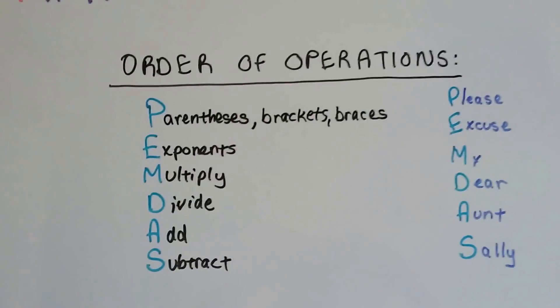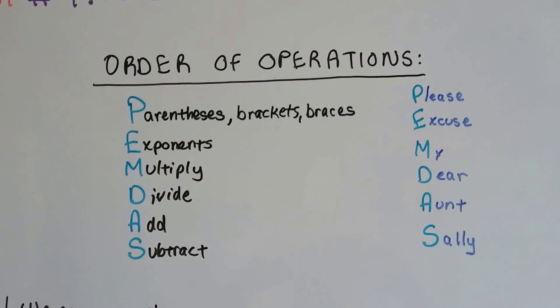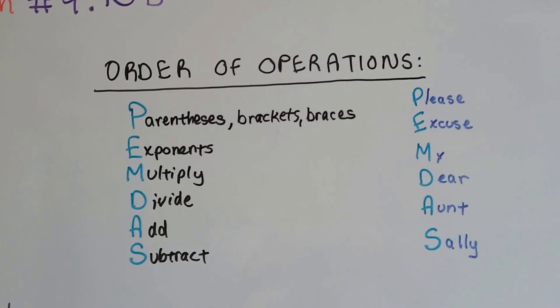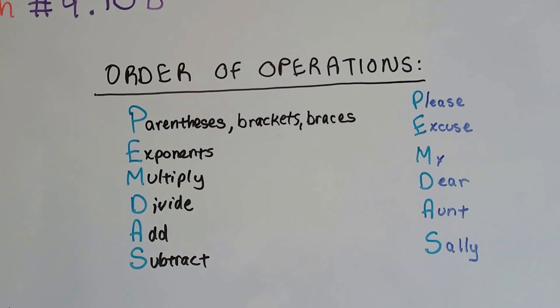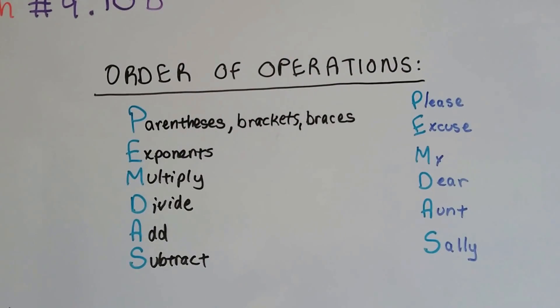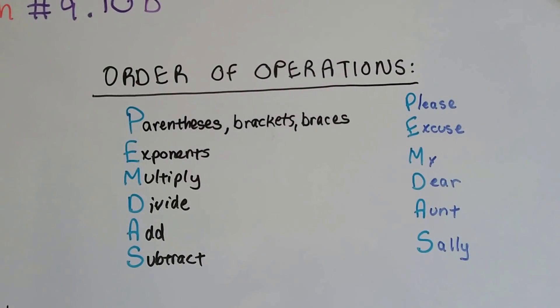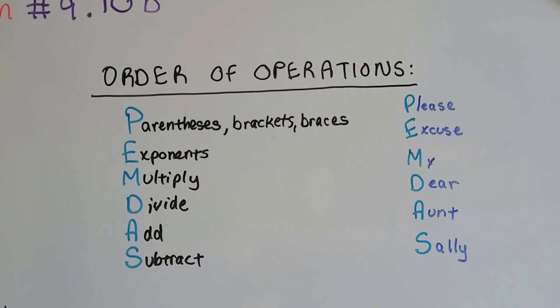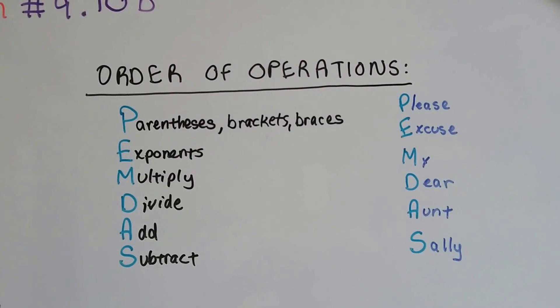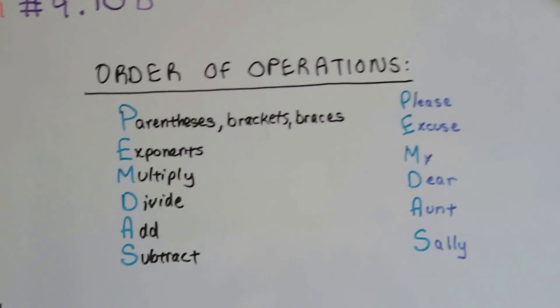So we talked about our order of operations and how important they are. Now we've added brackets and braces to our order of operations. We do those first, then we do exponents, and whatever the brackets and braces have inside of them, we do the exponents, multiply, divide, add, and subtract. I'll show you what I'm talking about.